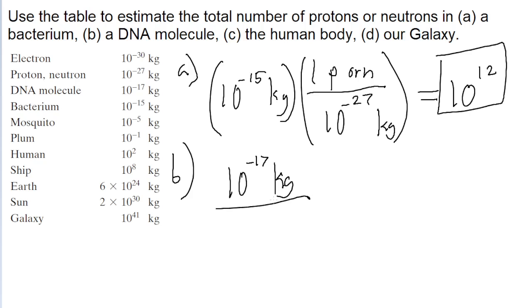Again, we divide that by the mass of a proton or neutron, which is 10 to the power of negative 27. Put that into a calculator, and we get 10 to the power of 10 protons or neutrons.